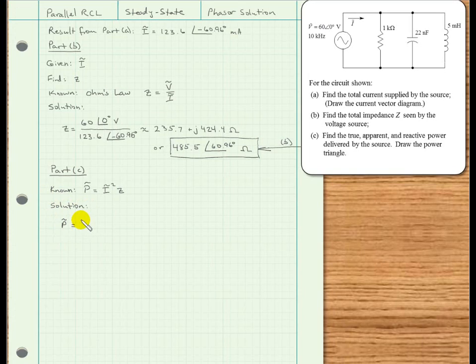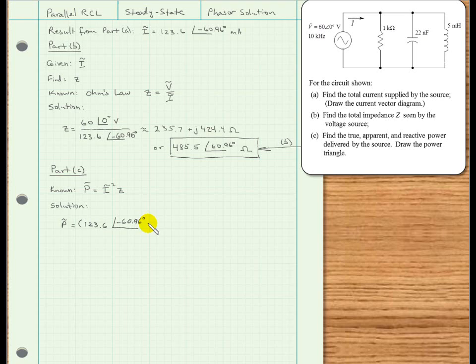So substituting in the values that we got from the previous parts of the problem, I have the power is equal to the current 123.6 at an angle negative 60.96 degrees, and that's milliamps, which I will square, and then multiply by the impedance 485.5 at an angle 60.96 degrees.